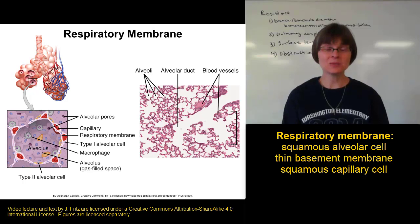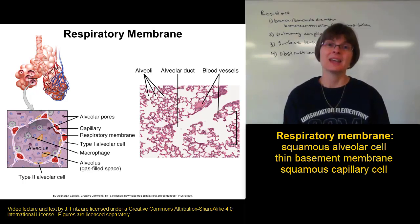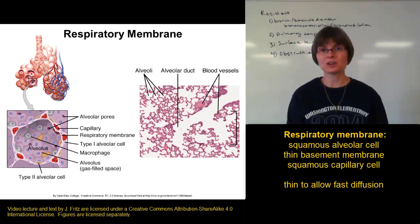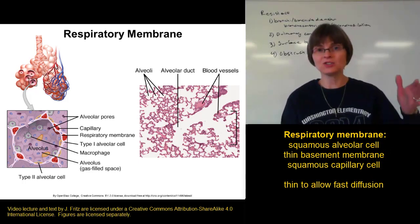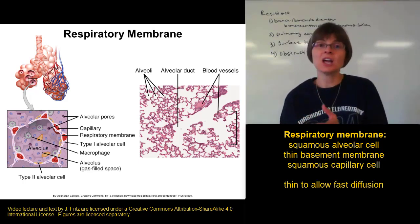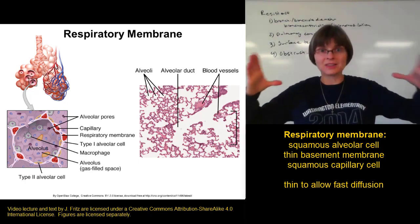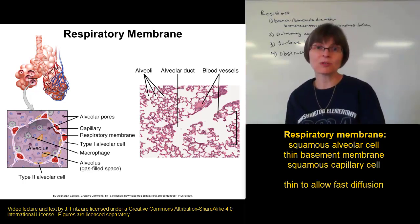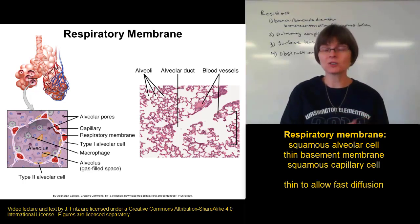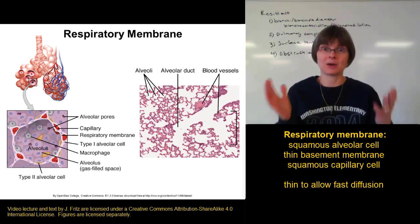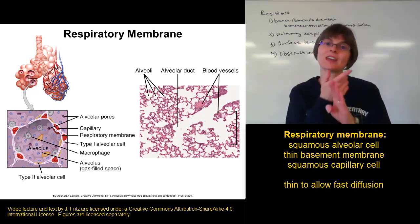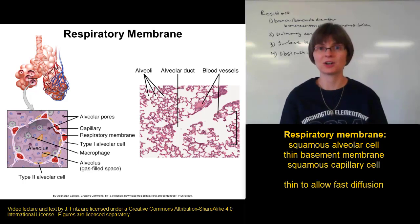Any idea why it needs to be thin? It has to be thin because we need to have diffusion across that membrane. If we're going to have oxygen moving from the lungs into the blood, we don't want it to have to go through a really thick membrane — that would take forever. If we're trying to get CO₂ from the blood into the lungs, we don't want it to go through a thick membrane either. So the respiratory membrane is very thin so that the gases can be exchanged across it very quickly.